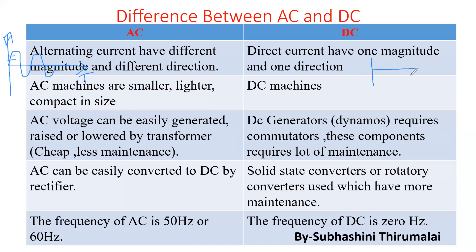AC machines are smaller, lighter, and compact in size, and the design of AC machines is very compact. On board a ship, if the machines are smaller and lighter, they can take more cargo. So AC machines are preferred. In comparison, DC machines are bigger in size.